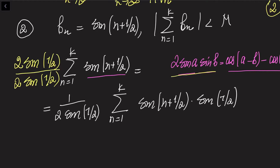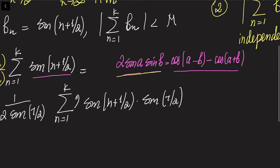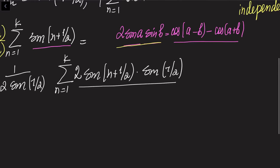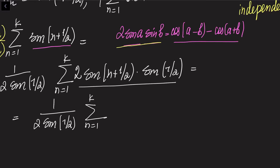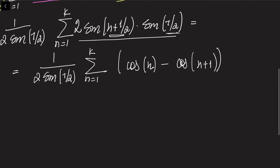Now we can apply the formula, getting 2·sin(a)·sin(b). Using this formula, we can write this as 1 divided by (2·sin(1/2)) times the sum from n = 1 to k of cosine of (n) minus cosine of (n + 1). Let me write down the first few terms by substituting n = 1, 2, 3, up to k, to see if some terms cancel.